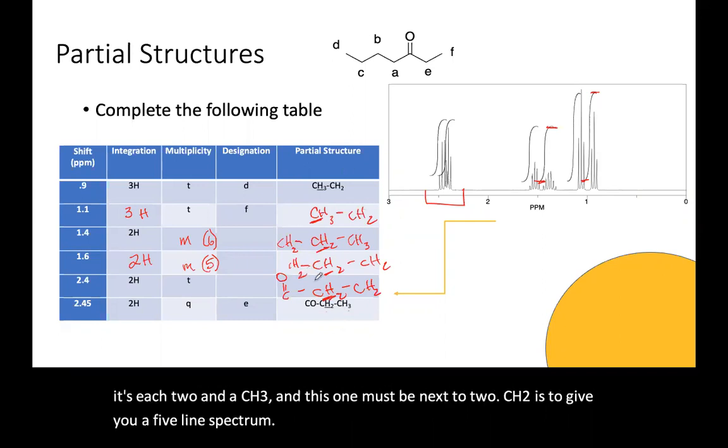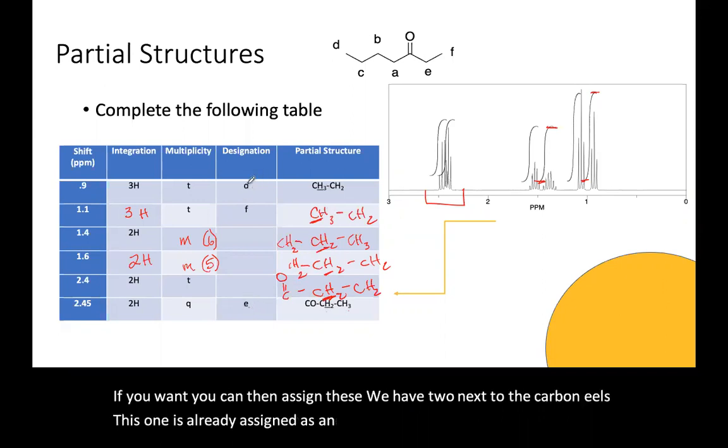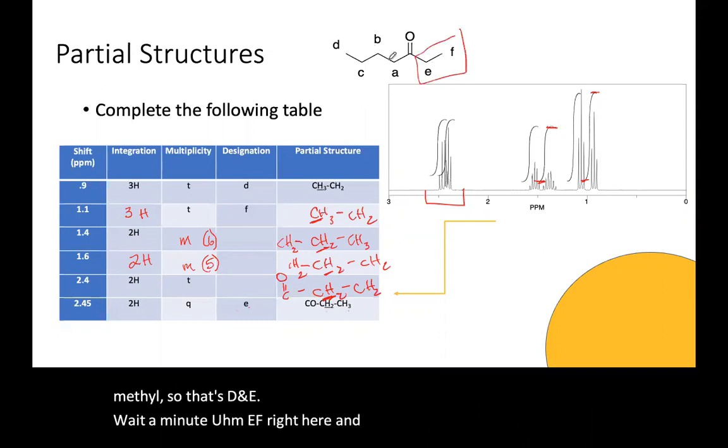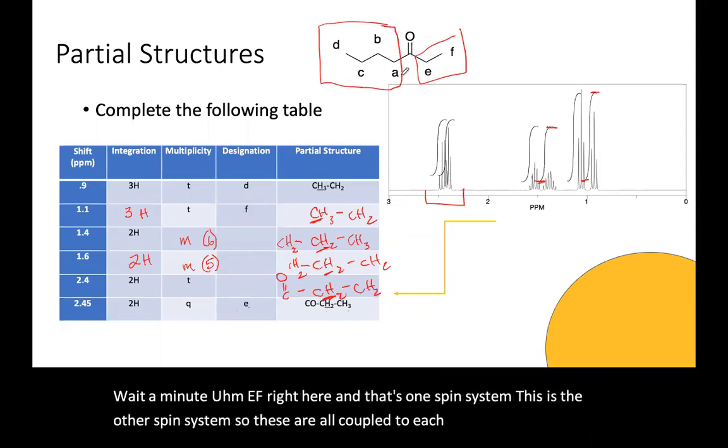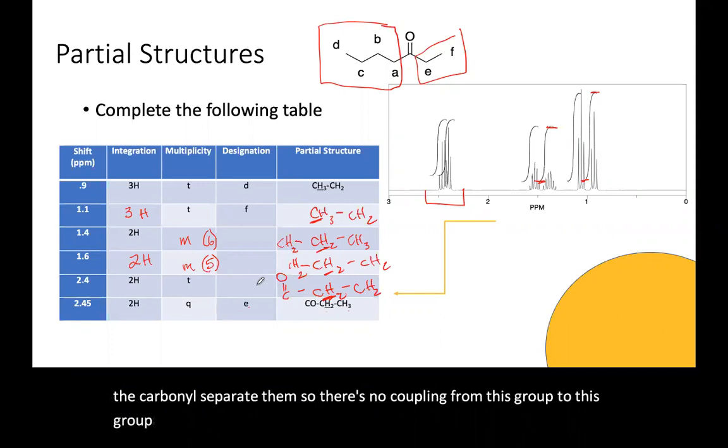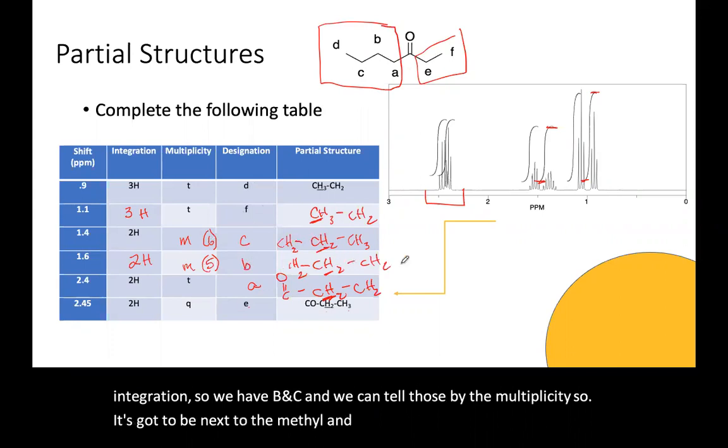If you want, you can then assign these. We have two next to the carbonyls. This one is already assigned as an E, which is because it's next to a methyl. So that's D and E. Oh, wait a minute. E and F right here. And that's one spin system. This is the other spin system. So these are all coupled to each other through multiplicity and the carbonyl separates them. So there's no coupling from this group to this group. So A is the one that's next to the carbonyl. D is the methyl from the integration. So we have B and C and we can tell those by the multiplicity. So C has got to be next to the methyl and the CH2 and B is between two CH2s.